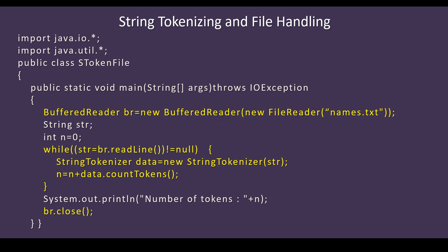The throws IOException means that if there is any input/output error in the program, the throws keyword will handle it and the program does not stop.